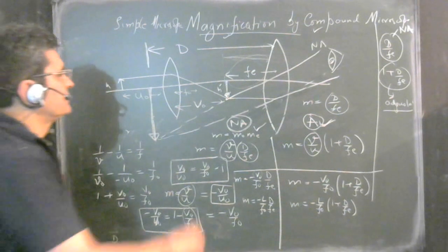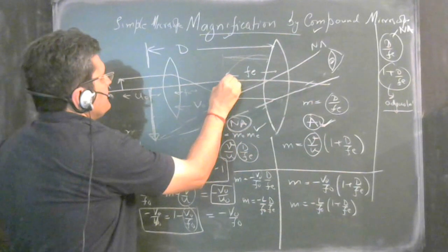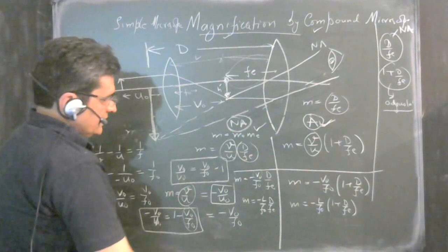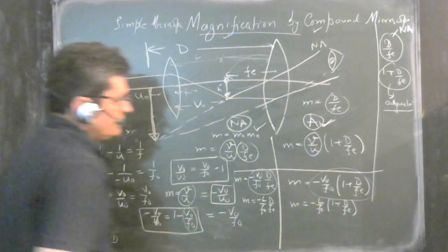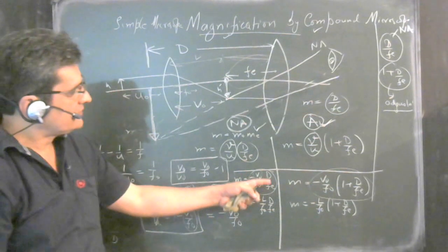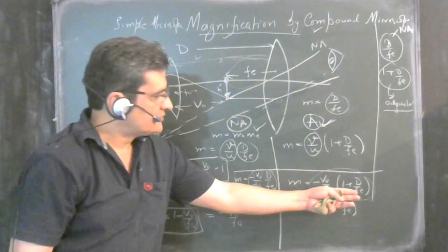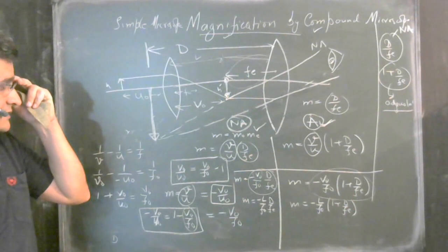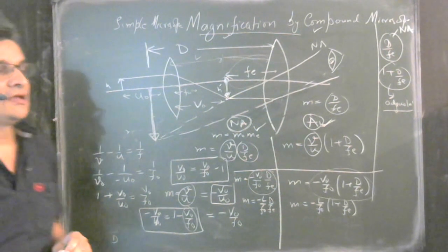So the final formulas are: M = −(L/F₀) × (D/Fe) for normal adjustment, and M = −(L/F₀) × (1 + D/Fe) for adjustment. The tube length L is the separation between the eyepiece and the objective — in some books it is taken as the distance between the focal points. The main formula to remember is M = −(L/F₀) × (D/Fe), with the only difference between the two cases being D/Fe versus (1 + D/Fe). That's all for magnification by compound microscope.